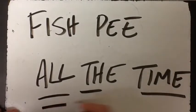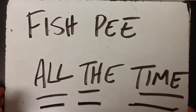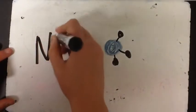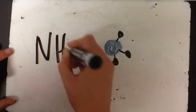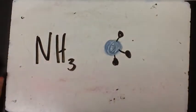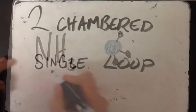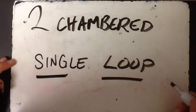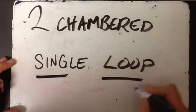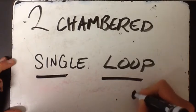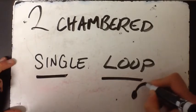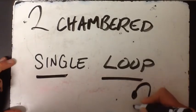Fish excrete nitrogen as ammonia — they don't have to worry about water loss, so they can excrete ammonia anywhere they want. The thing to remember about fish circulation is that it is a two-chambered heart that goes in a single loop throughout the process.